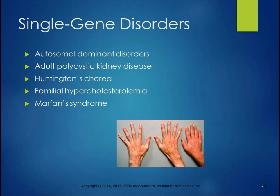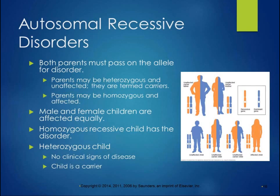Autosomal dominant disorders include adult polycystic kidney disease, Huntington's chorea, familial hypercholesterolemia, and Marfan syndrome. If you have any one copy of the gene, you'll have the effect. All four of these conditions don't manifest until later in life, so people often don't find out they have them until after they've already passed them on to the next generation.